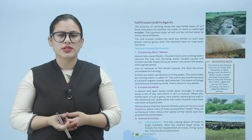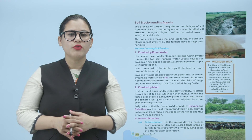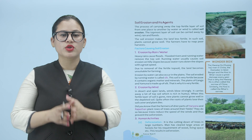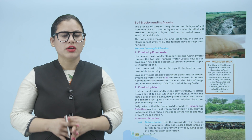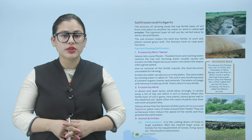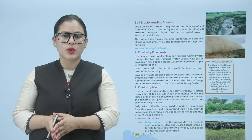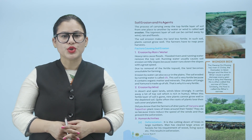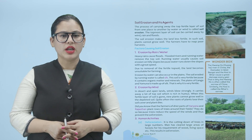Jaisi ki barish aa gayi ya bohot tez hawa chal rahi hai ya flood hai, in ki wajah se kya hota hai ki topsoil remove ho jaati hai. Ab soil erosion ho ga toh jo soil hai wo less fertile ho jaegi aur us mein phir jo crops hain wo achi se grow nahi kar paengi. Erosion by rain water: heavy rain causes floods; flooded rivers and running water remove the topsoil. Running water usually causes soil erosion on hilly slopes because water runs down the slopes with great speed.